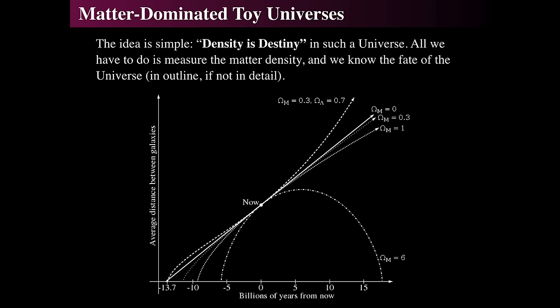When I was in grad school in the 1990s, the big idea was that people were trying to measure the matter density of the universe and therefore how fast the universe was decelerating. The density is the destiny. People wanted to know how long before a Big Crunch or how long before a Big Freeze. That was the ultimate concept of the 1990s, and one of the reasons why the Hubble Space Telescope was launched.